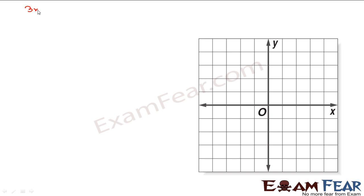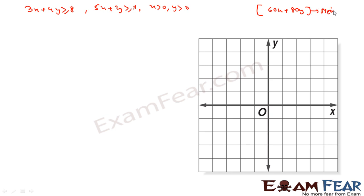Let's solve this. We have: 3x + 4y ≥ 8, 5x + 2y ≥ 11, x ≥ 0, y ≥ 0, and minimize Z = 60x + 80y. For the first equation 3x + 4y = 8: putting x = 0 gives y = 2, and putting y = 0 gives x = 8/3. So we plot the points (0, 2) and (8/3, 0) and join them.